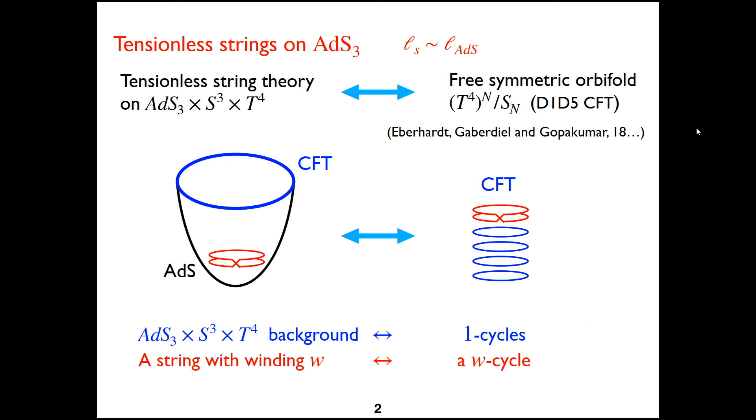So let's begin with the AdS3. Tensionless here means the string length scale is comparable to the AdS length scale. And this particular bulk theory is dual to a free symmetric orbifold CFT called D1D5 CFT. And this CFT is made by N copies of a CFT and we represent each copy as a cycle in the boundary CFT.